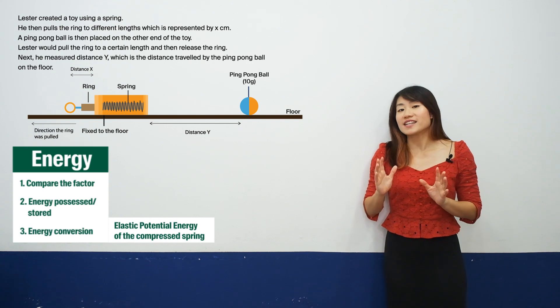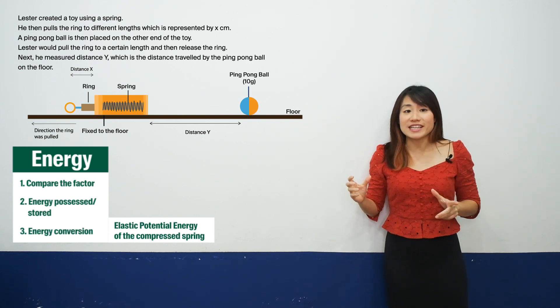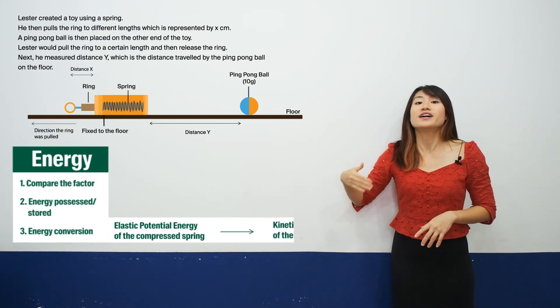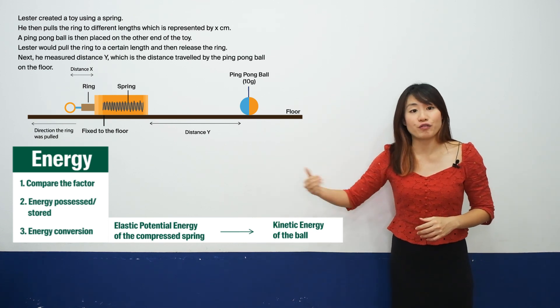Now all you have to do is to identify the energy conversion here. So when the ring is released, the elastic potential energy of the spring would be converted to kinetic energy of the ball. And that's how the ball is able to move on the floor.